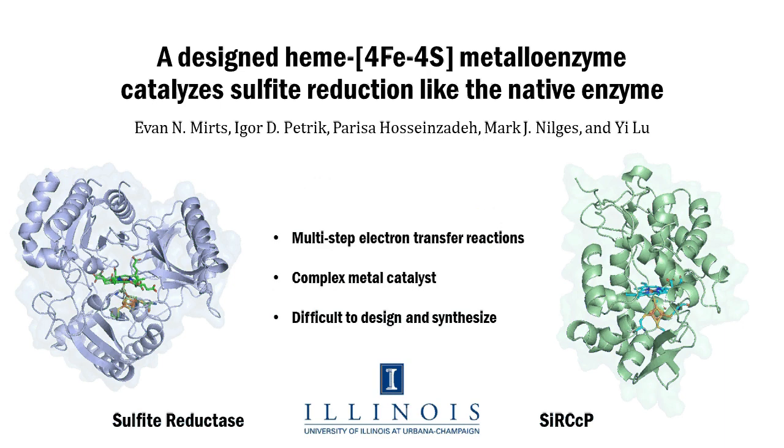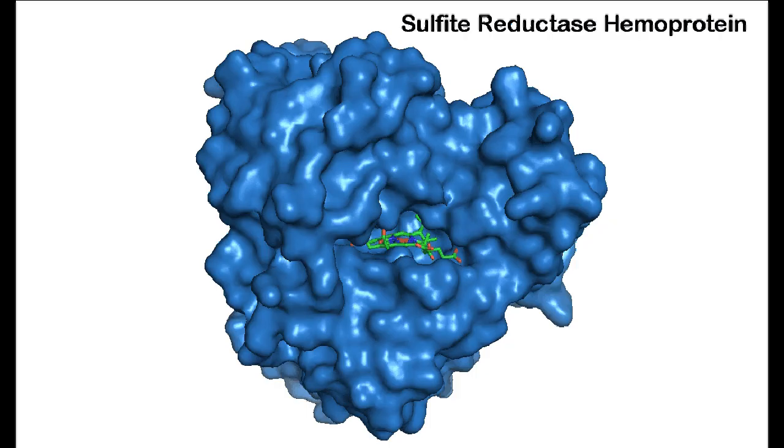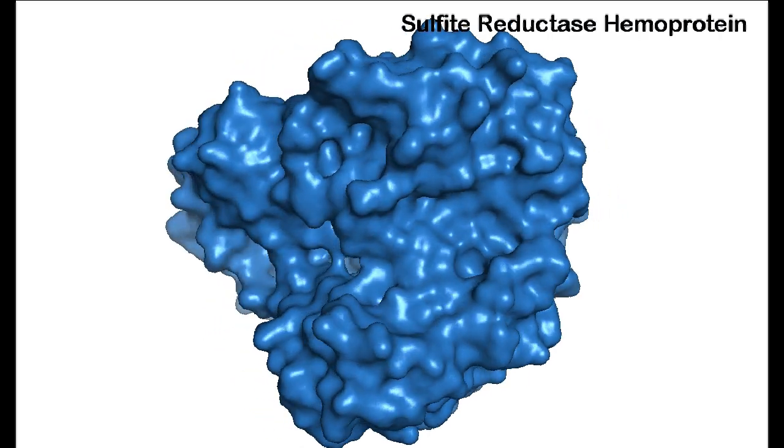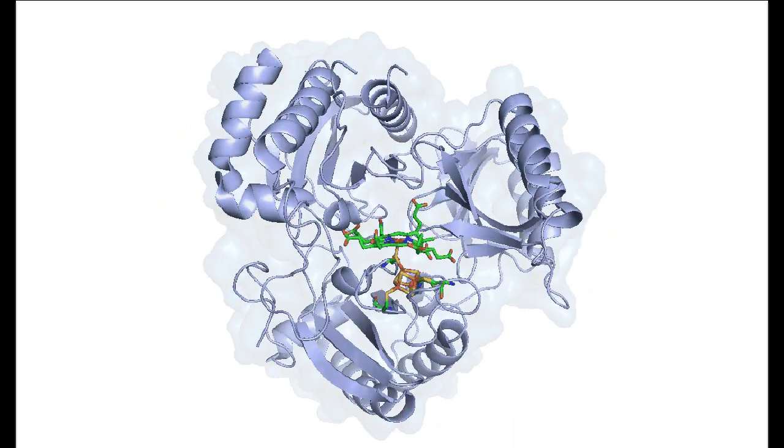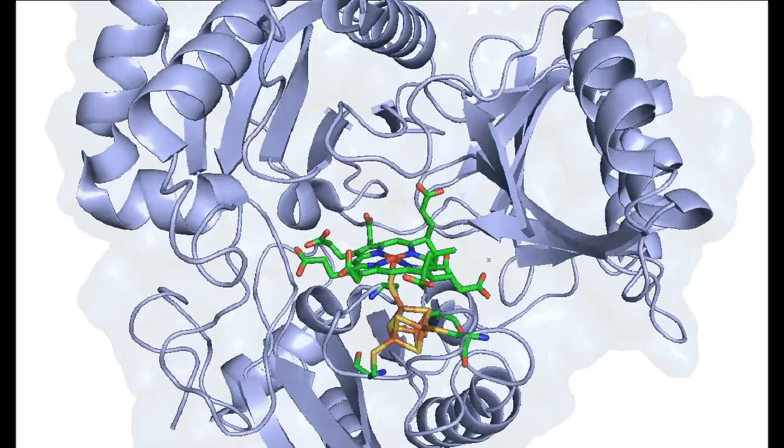Chemists have not been able to create catalysts to remove sulfite because it requires multiple steps of reactions using a complex active site that is difficult to design and synthesize. Bacteria and plants use the enzyme sulfite reductase to reduce sulfite completely to hydrogen sulfide by completing six electron transfer steps.